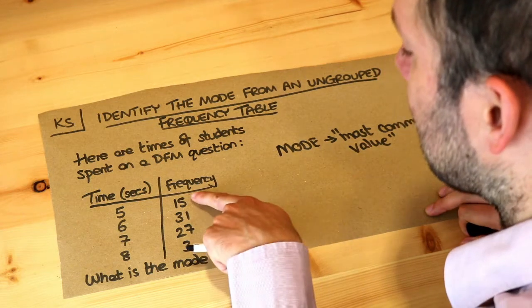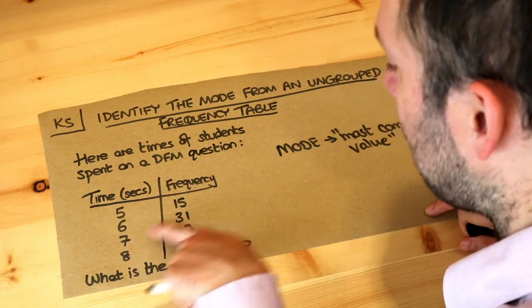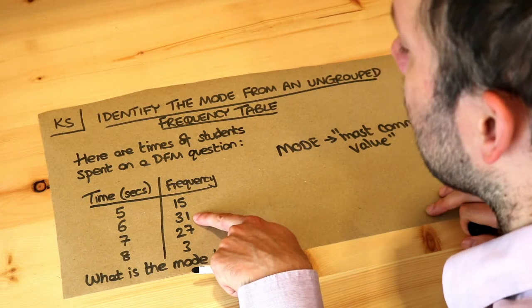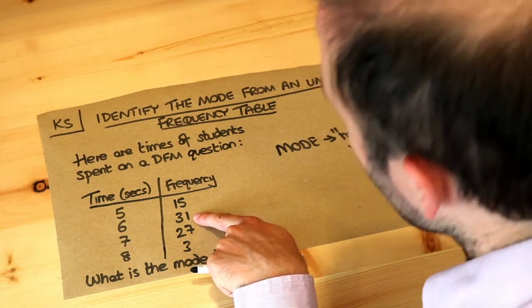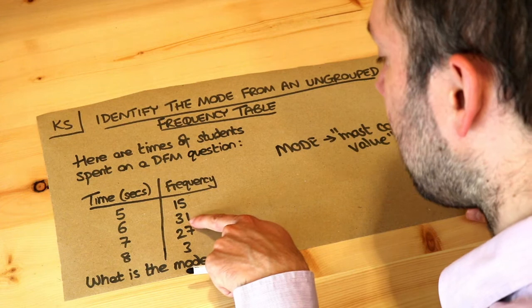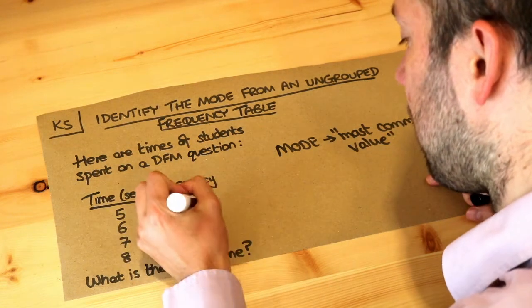Now what's the most common value is to say, well, which of these times has the highest frequency? Because that will be the most commonly occurring one. So we can see, look, this is the highest frequency here.